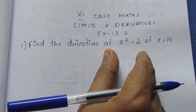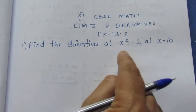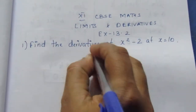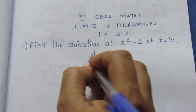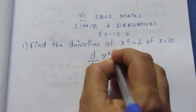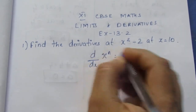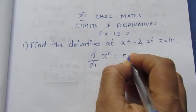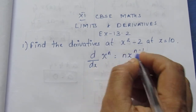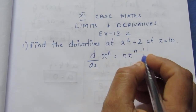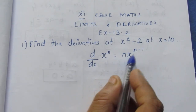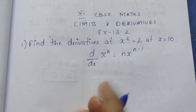So let's talk about the derivative here. We have a formula for the derivative of x power n. The derivative of x power n is equal to nx power n minus 1.